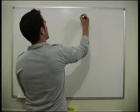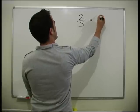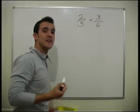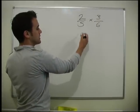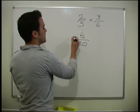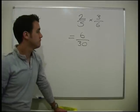Let's look at 2 fifths times by 3 sixths. So again, we just times all the numbers together. 2 times 3, 6. 5 times 6, 30. So that's our answer. 6 over 30. So that's straightforward.